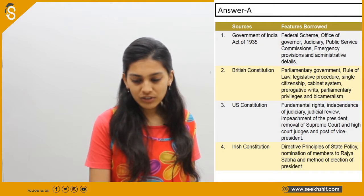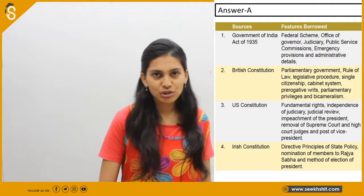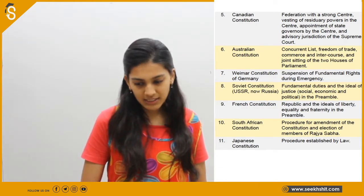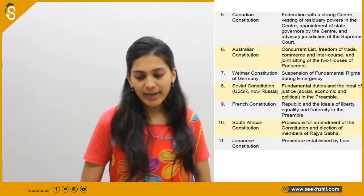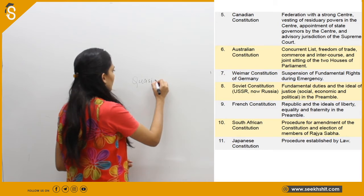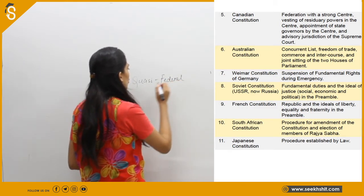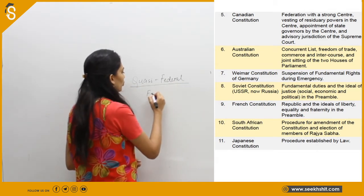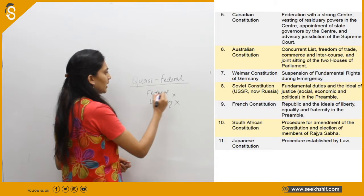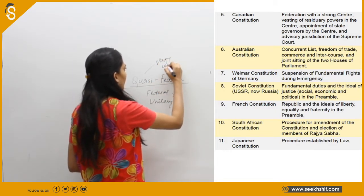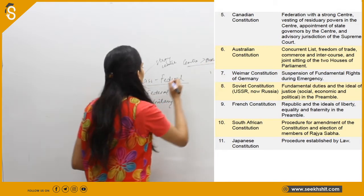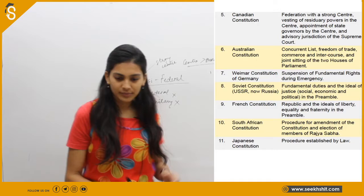From the Irish Constitution, we have borrowed Directive Principles of State Policy, nomination of members to Rajya Sabha, and method of election of the President. From Canada, we have taken federalism — federation with a strong center — like India's appointment of state governors by the center and advisory jurisdiction of the Supreme Court. That's why India's federalism is called quasi-federal.